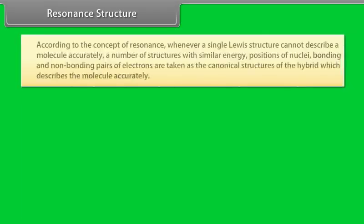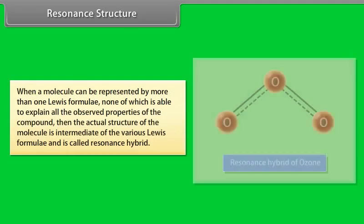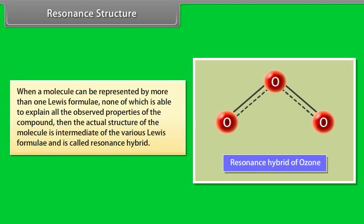Resonance structure: according to the concept of resonance, whenever a single Lewis structure cannot describe a molecule accurately, a number of structures with similar energy, positions of nuclei, bonding and non-bonding pairs of electrons are taken as the canonical structure of the hybrid. When a molecule can be represented by more than one Lewis formula, none of which explains all the observed properties, the actual structure is intermediate of the various Lewis formulae and is called the resonance hybrid.